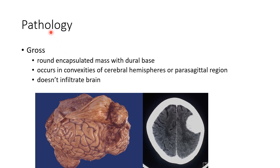Now let us see about the pathology of meningioma. Grossly, it is a round encapsulated mass with a dural base. It occurs in the convexities of cerebral hemispheres or the parasagittal region, and does not infiltrate the brain. This picture shows a gross specimen of meningioma, and this is a CT of the brain with meningioma.